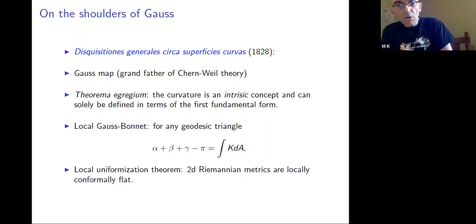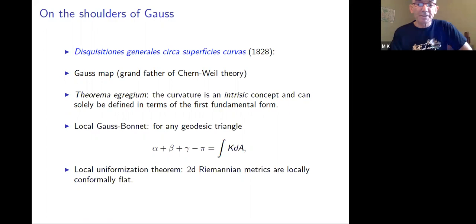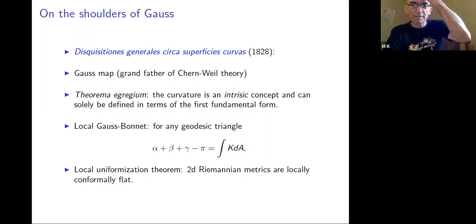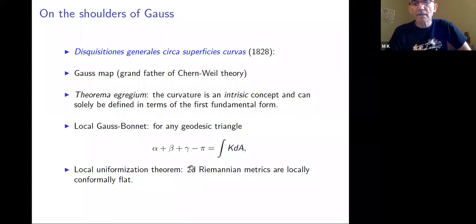He also proved, before this paper, another amazing theorem — a local uniformization theorem showing that two-dimensional Riemannian metrics are always locally conformally flat. In two dimensions, you can always find local coordinates such that the metric is of the form e^h times (dx² + dy²). This is also a clue for us in two-dimensional studies — in the commutative case, this covers all cases.